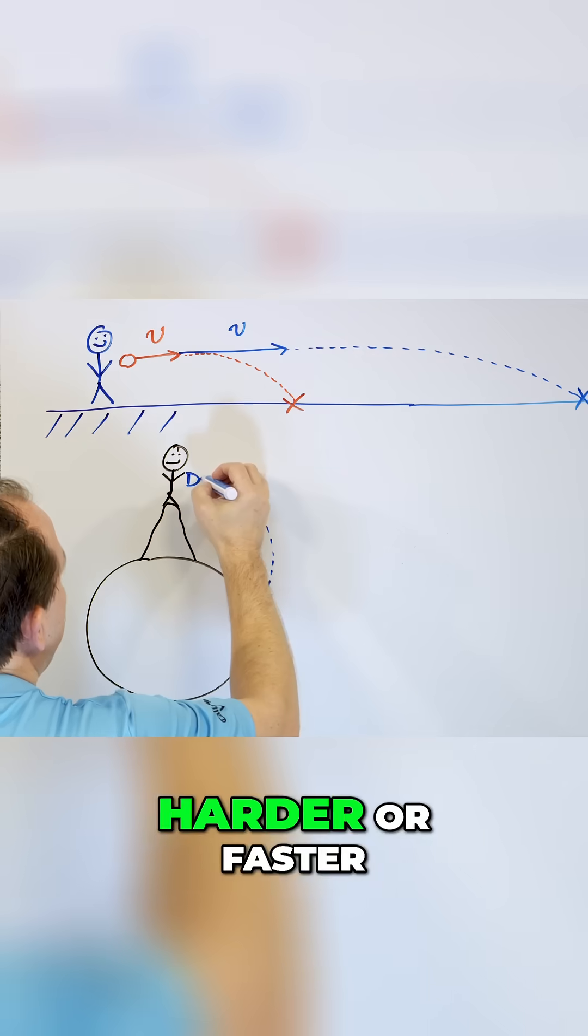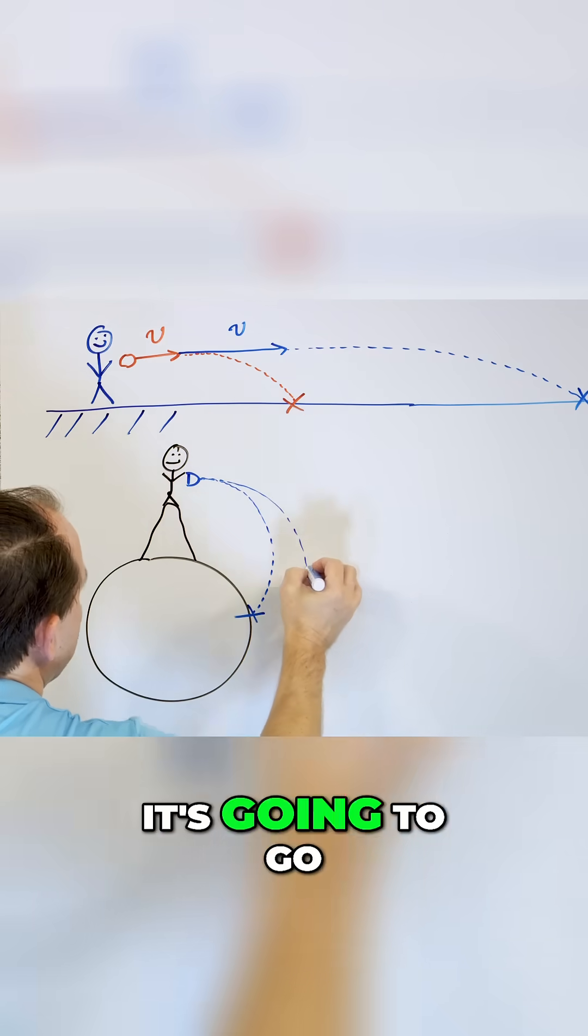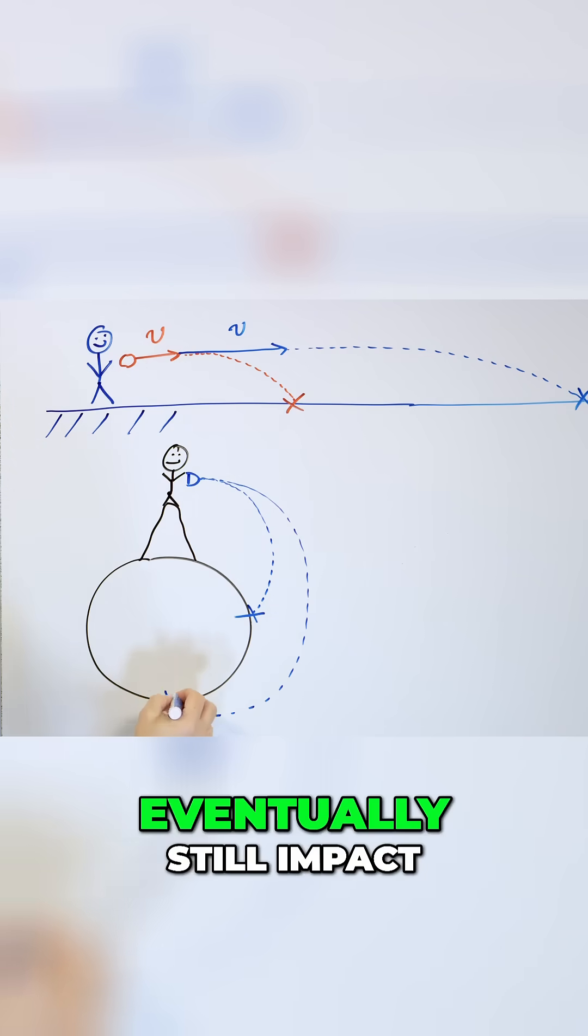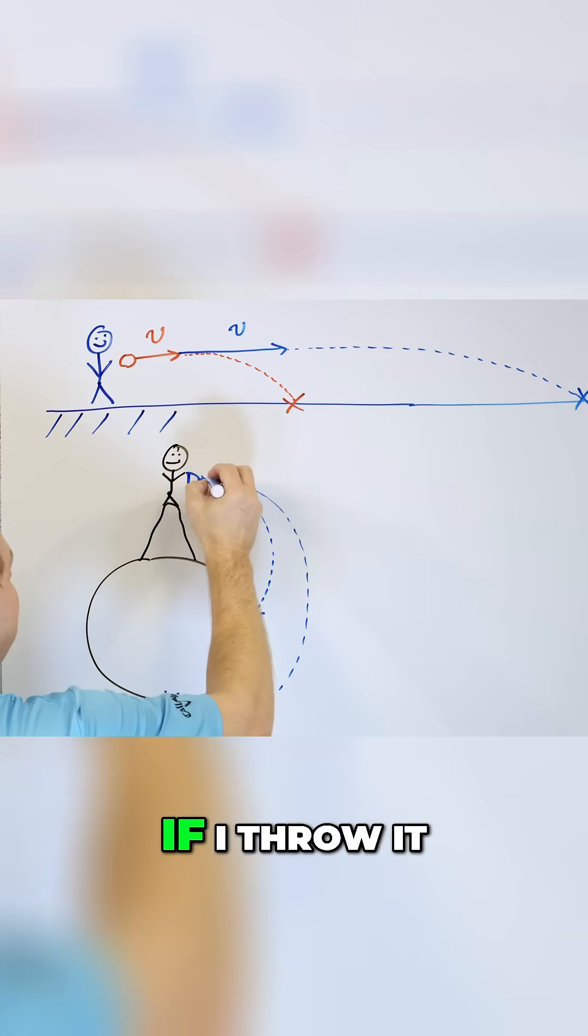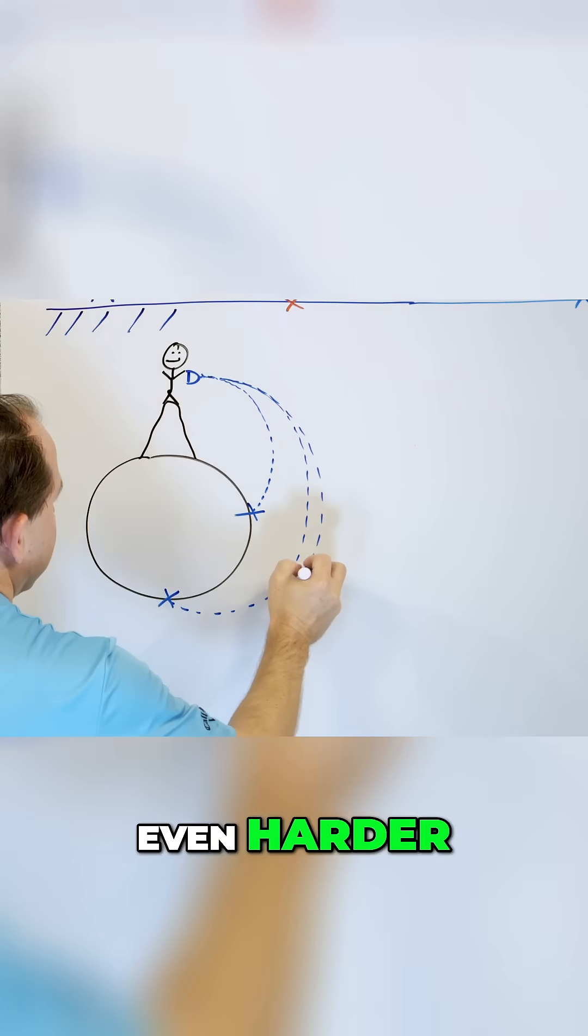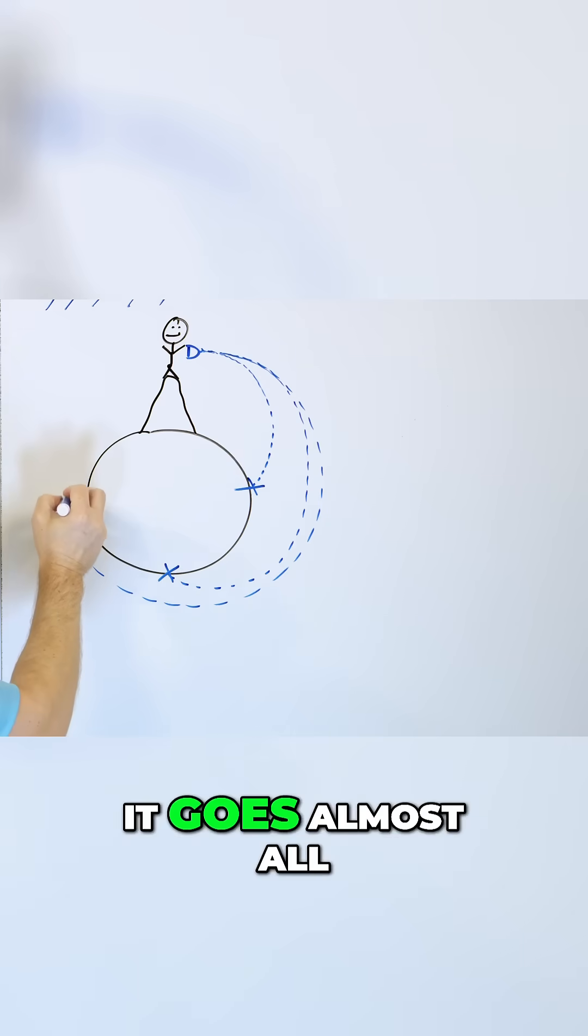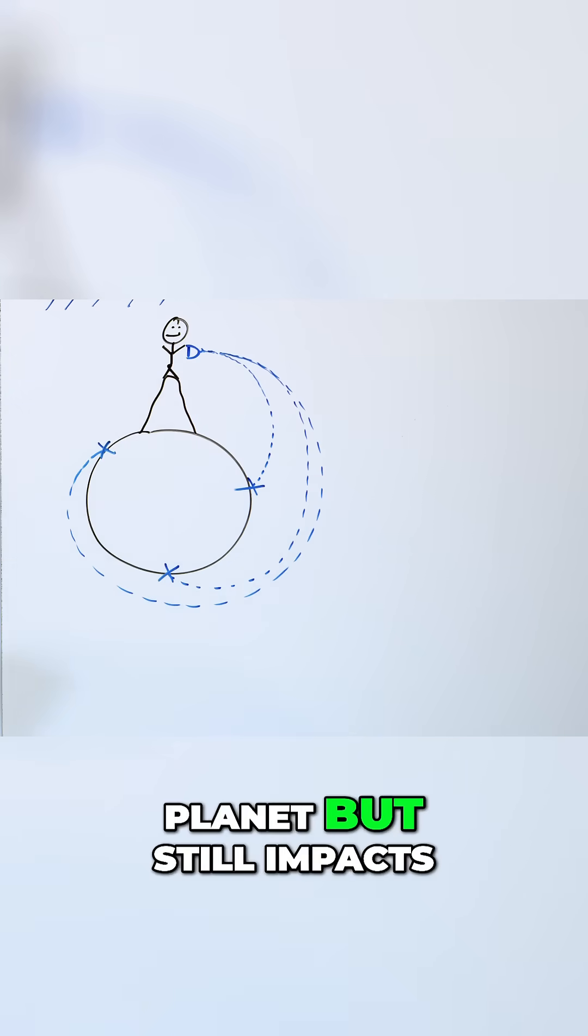If I throw it harder or faster, it's going to go a little bit farther around the planet, but eventually still impact. If I throw it even harder, you see what's gonna happen. It goes almost all the way around the planet, but still impacts.